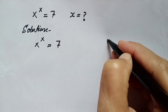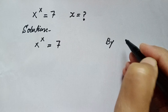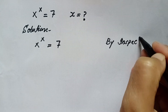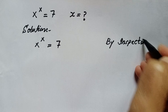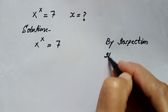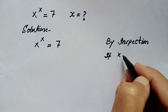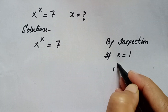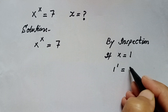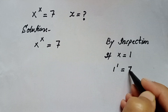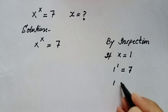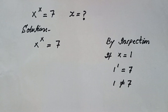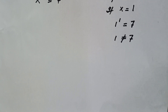To solve this question, first we will use the inspection method. By inspection, we will take different values of x and check our equation. If x is equal to 1, we plug in: 1 to the power 1 is equal to 1, which is not equal to 7.